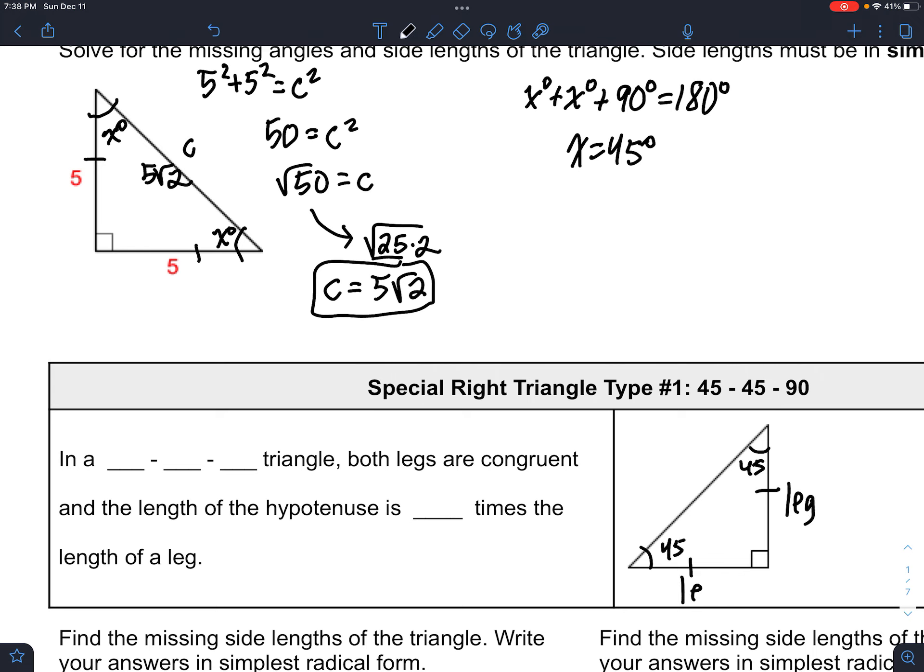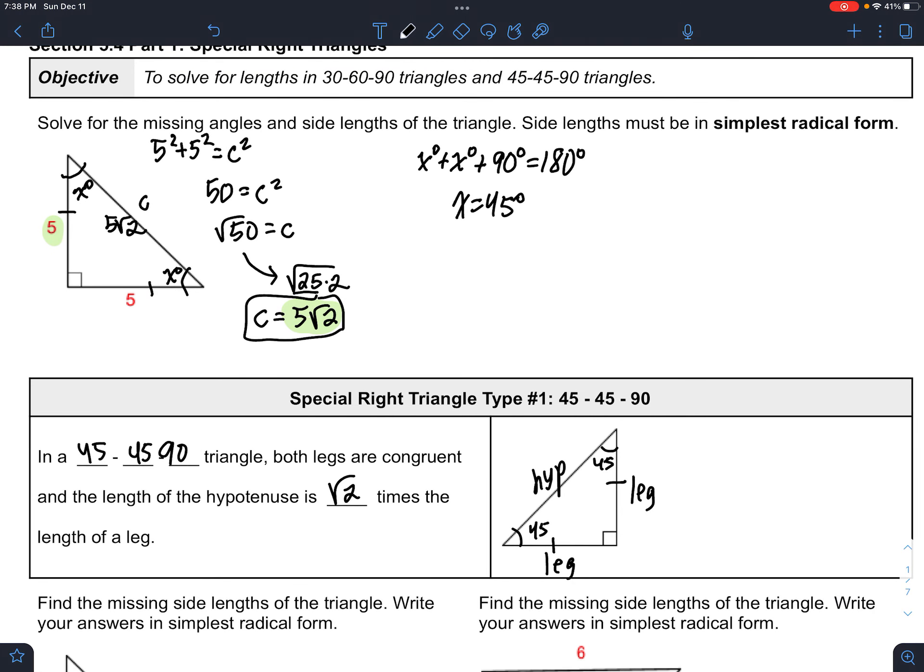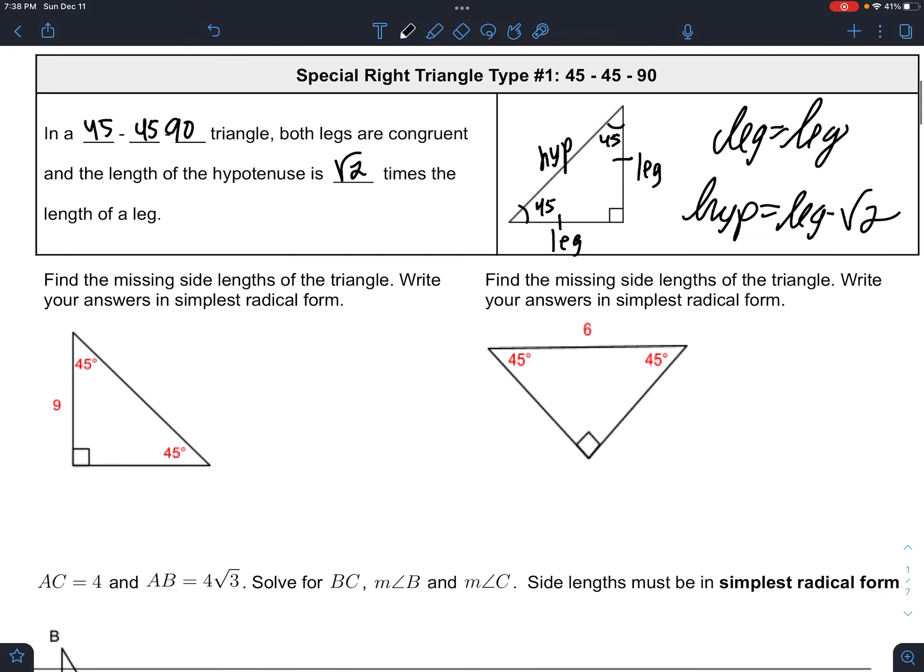And the general setup is you have two legs, and the legs are equal, and you have a hypotenuse. And the rules are for 45, 45, 90, is that the hypotenuse, as we can see here, it's 5 square root 2 and that's coming from a 5. So all you do is you multiply the leg times square root 2. That's the one thing you really need to know. So the leg is the leg, and the hypotenuse is the leg times square root 2.